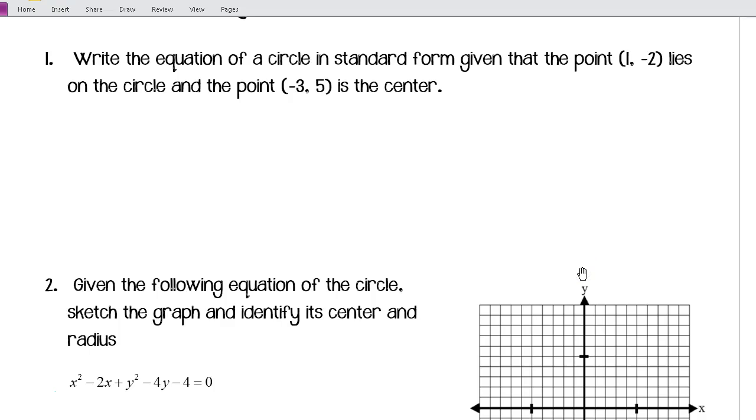So, for the first one, we want to write the equation of a circle in standard form, given that the point (1, -2) lies on the circle, and (-3, 5) is the center. So, I've got (h,k) is the center, is (-3, 5). And we want to put this in standard form. So, we're looking at (x - h)² + (y - k)² = r².